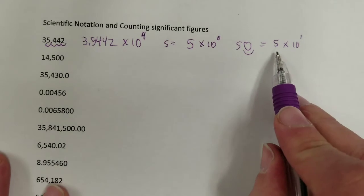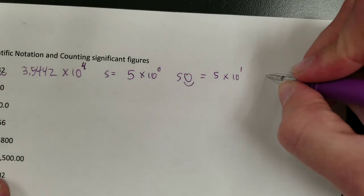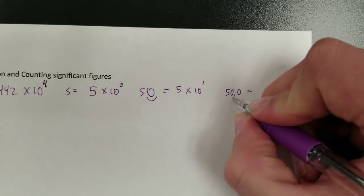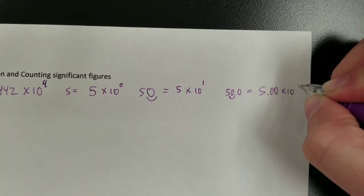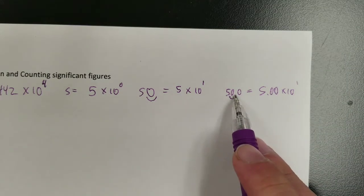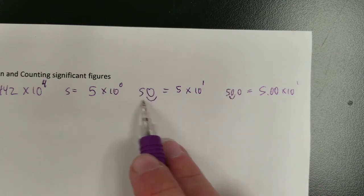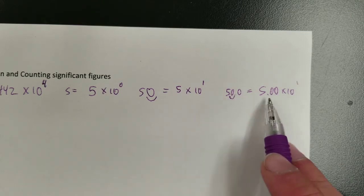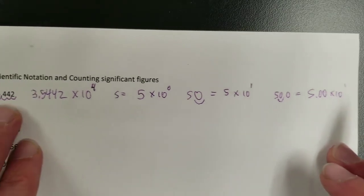We don't put 5.0 because it's just 50. However, if we had 50.0, for example, that would become 5.00 times 10 to the 1st power. So basically, if there are zeros at the end with no decimal, those zeros do not appear in scientific notation. If there are zeros at the end and there is a decimal, that means they will appear in scientific notation. The reason why has to do with significant figures.